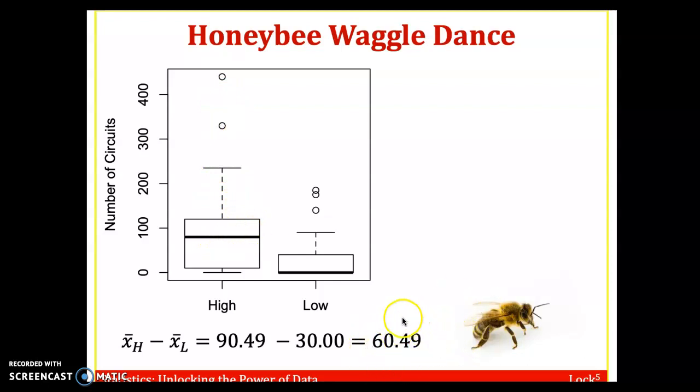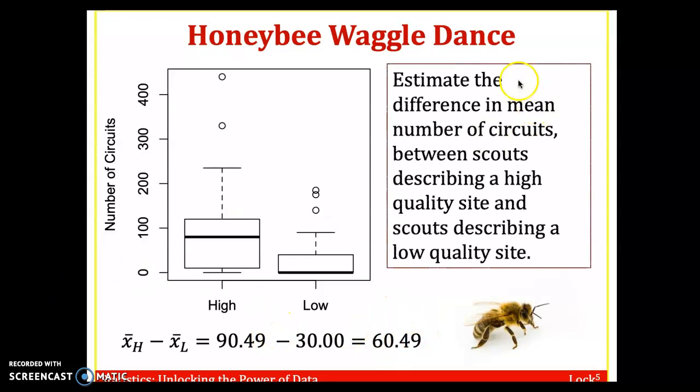But for this section, we're going to focus on the difference of the two means. So the difference in mean circuits between scouts describing a high quality site and scouts describing a low quality site was 60 circuits on average from the sample.